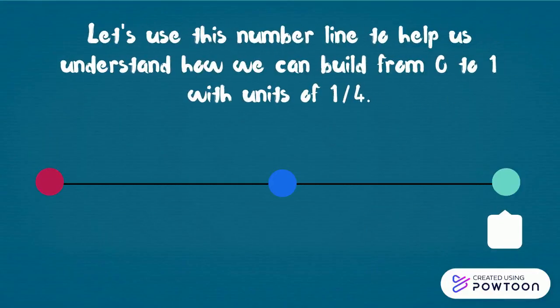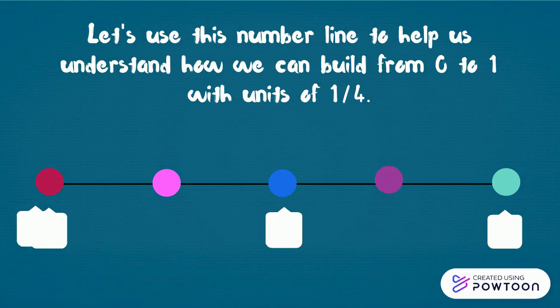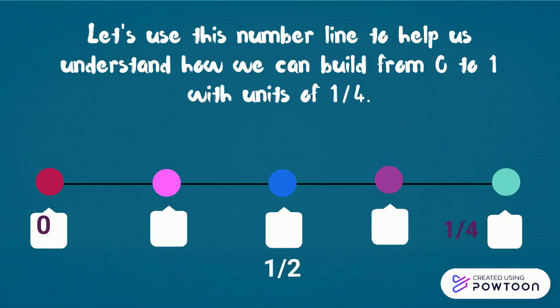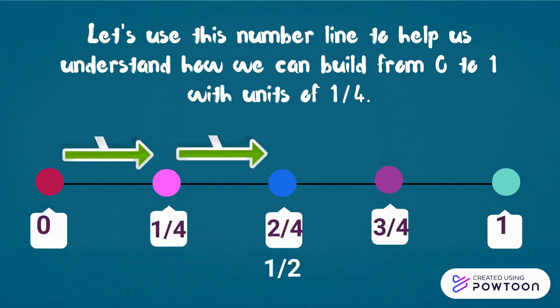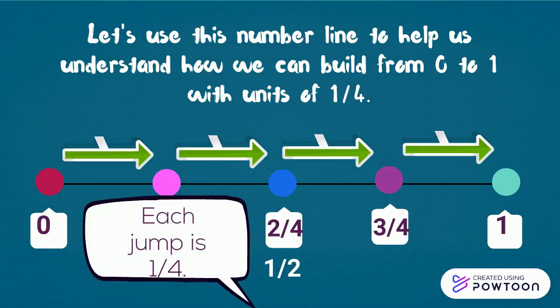Let's use this number line to help us understand how we can build from zero to one with units of one-fourth. Each jump is one-fourth: zero, one-fourth, two-fourths equivalent to one-half, three-fourths, one.